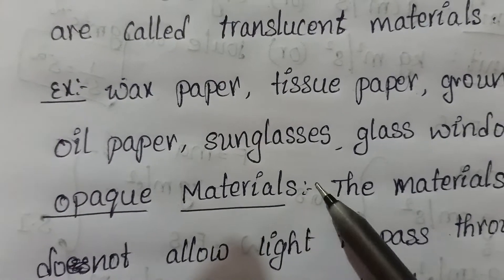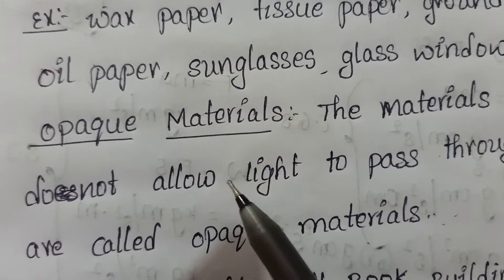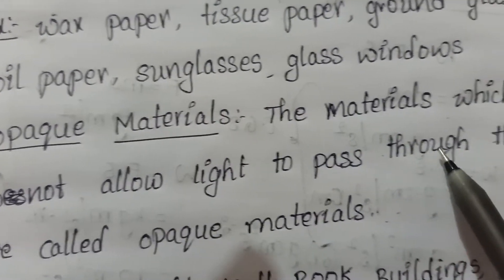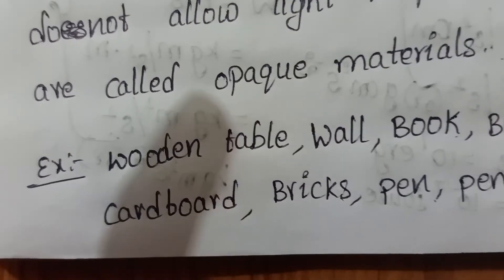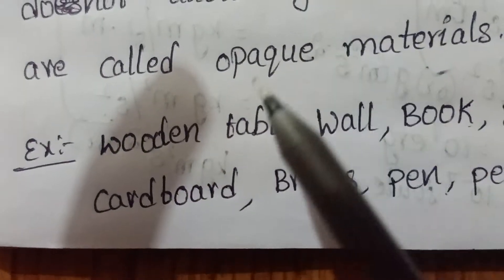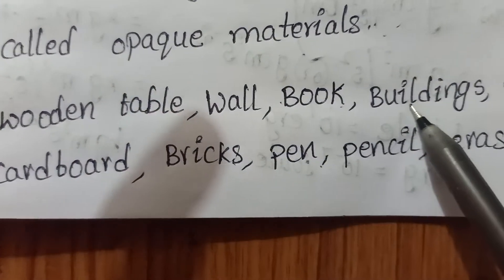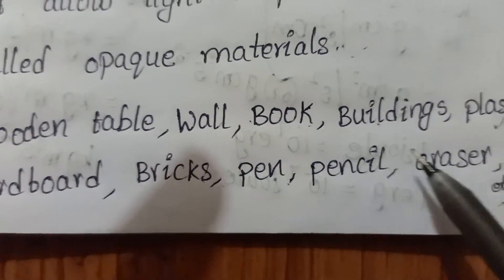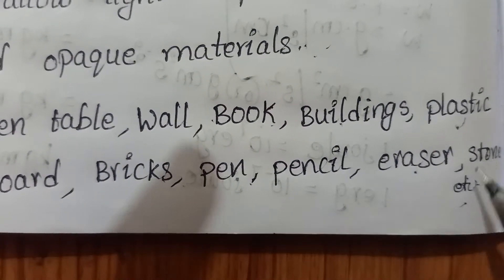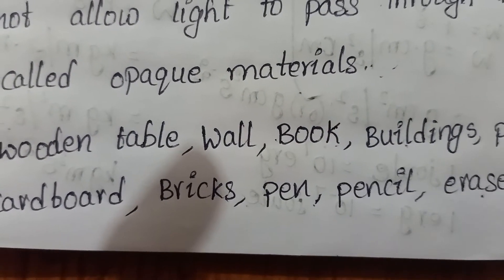Opaque materials: the materials which does not allow light to pass through them are called opaque materials. Coming to the examples, wooden table, wall, book, buildings, plastic, cardboard, bricks, pen, pencil, eraser, stone, etc. These are the examples of opaque materials.